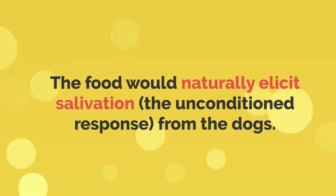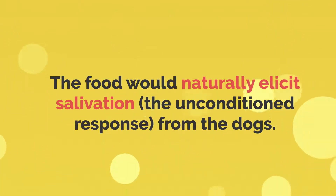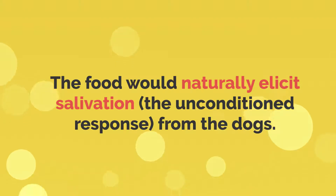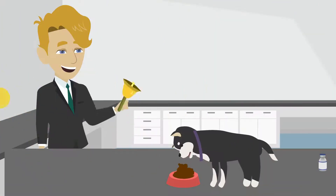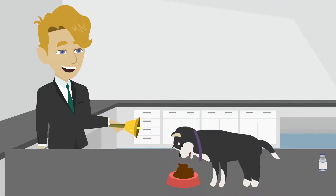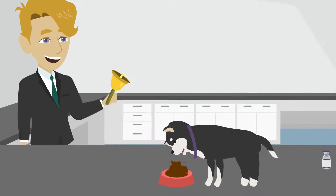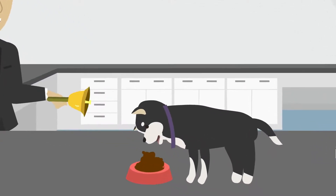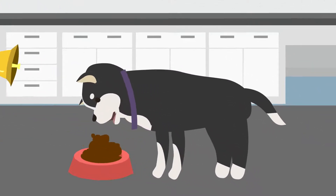The food would naturally elicit salivation, the unconditioned response, from the dogs. However, when Pavlov consistently rang the bell — the conditioned stimulus — just before presenting the food, the dogs began to associate the two stimuli.